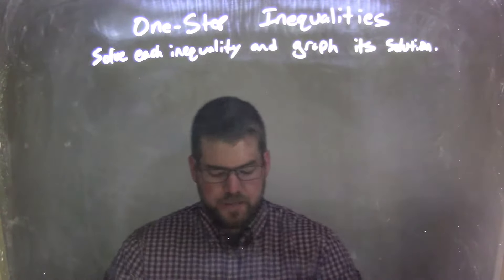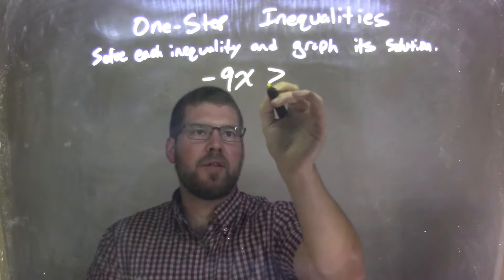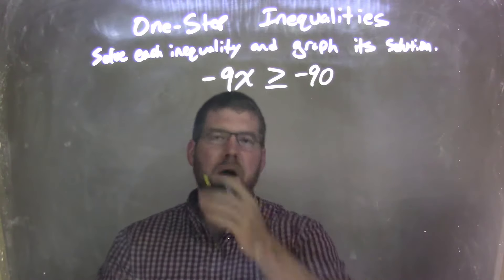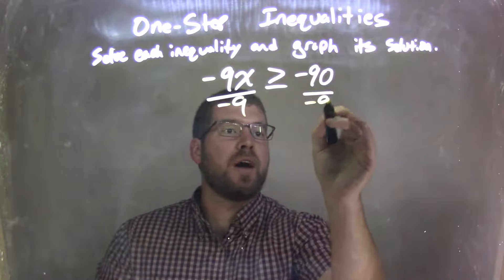So if I was given this inequality, negative 9x is greater than or equal to negative 90, the first thing I'm going to do here is get x by itself, so I'm going to divide by negative 9 to both sides.